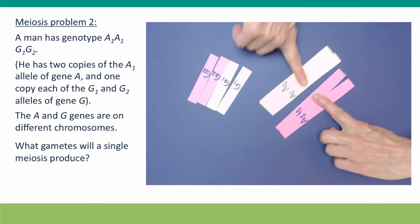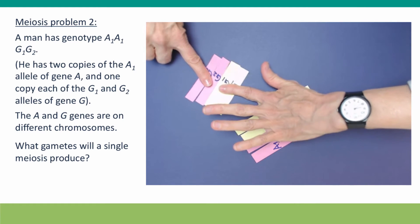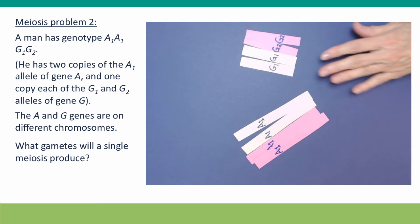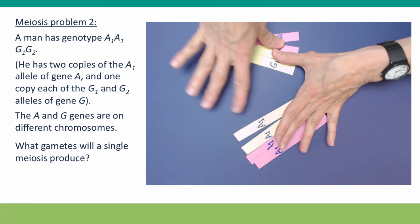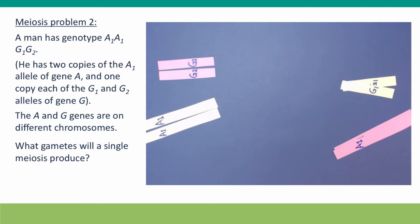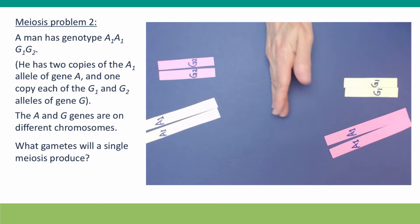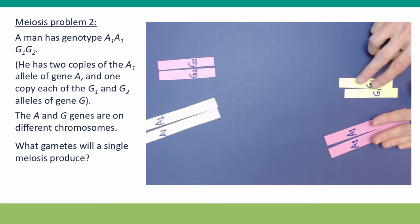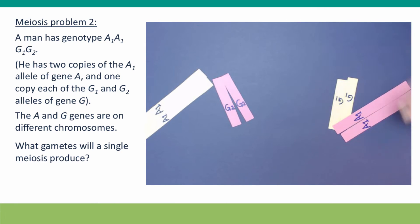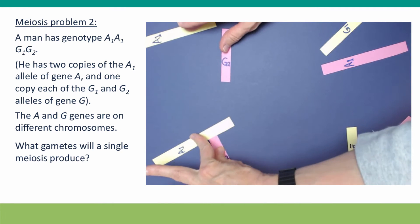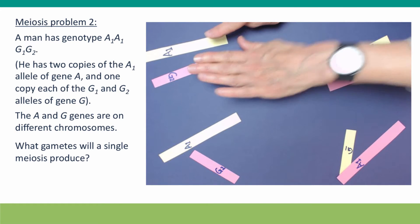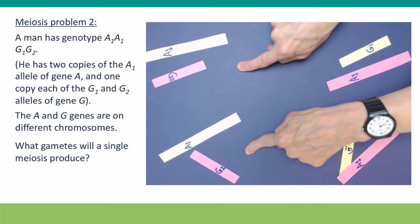Spindle fibers attach and move the paired homologues — each consisting of two sisters — to the center of the cell. Once all the chromosomes have done the same, the cell divides and the spindle fibers pull the pairs of sisters, one of each pair of homologues, to the two poles of the cell. Then meiosis II: the paired sisters are attached to spindle fibers and moved to the center of the cell. The cell divides, and we have our four gametes: two with genotype A1G1, two with genotype A1G2.